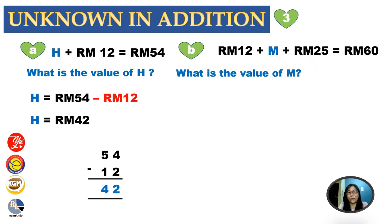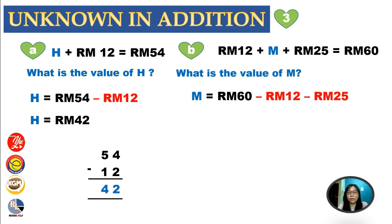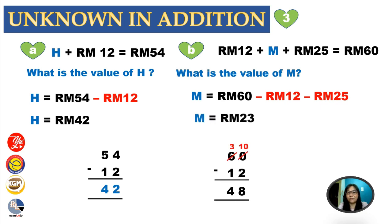When you come to Year Five, the value of money is quite big, plus the sen. Normally you have about three numbers. For example: RM12 plus M plus RM25 equals RM60. What is the value of M? Using the same method: M equals RM60 minus RM12 minus RM25. The answer is M equals RM23.